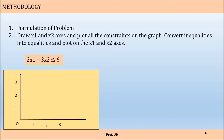For example, consider the constraint 2x1 + 3x2 ≤ 6. This is my x1 axis and this is my x2 axis. First, convert the inequality into an equality: 2x1 + 3x2 = 6. To plot this, put x2 = 0 and find x1 = 3, giving you one point. Similarly, put x1 = 0 and find x2 = 2. Connect these two points — this line represents 2x1 + 3x2 = 6.